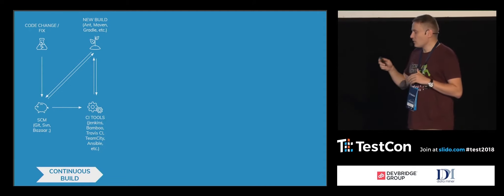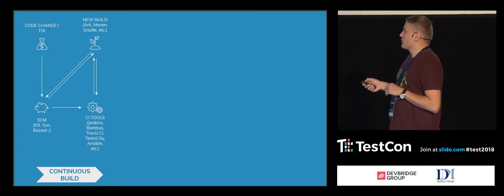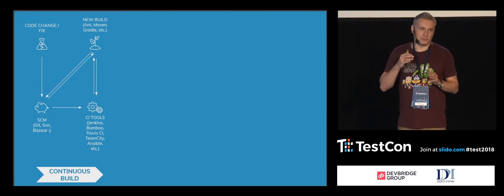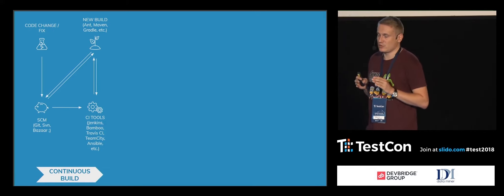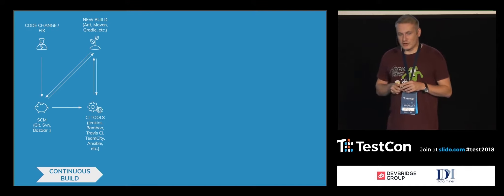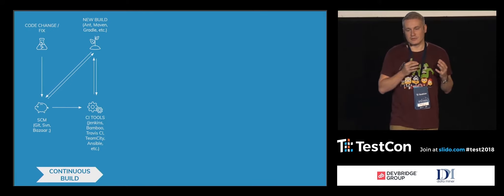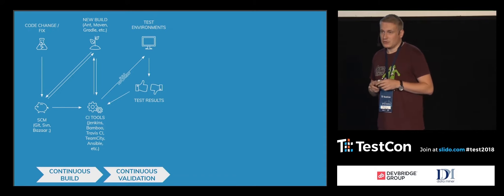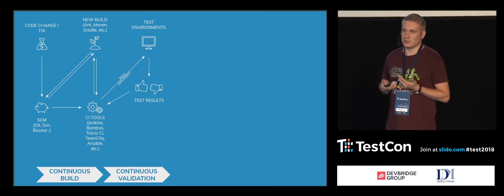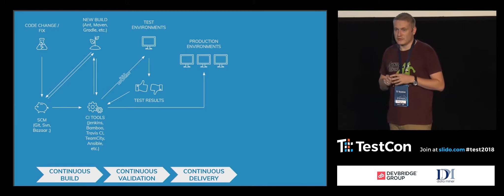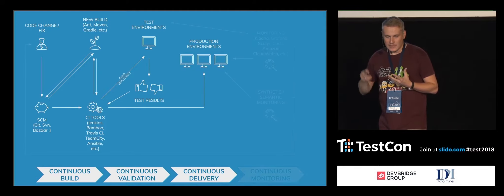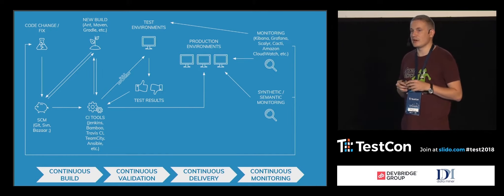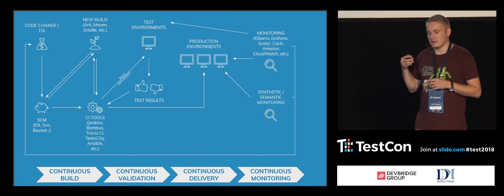How does it look in general? We have continuous build — whatever tool, approach, or branching model you use. Then we have validation, which is what we generally call tests or test automation. Later, we have continuous delivery — deploying something to production. And as the last step, which was never in the area of testers' interest a couple of years ago, is continuous monitoring.